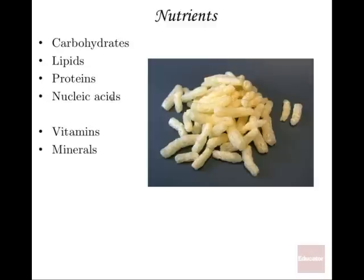Looking at nutrients in our diet, there are four major organic compounds: carbohydrates, also called sugars; lipids, also known as fats; proteins, which make up the majority of your solid matter — if you took all the water out of an organism, the next most abundant substance is protein, extremely important for cellular structure and functionality; and nucleic acids — DNA and RNA — whose importance can't be denied.